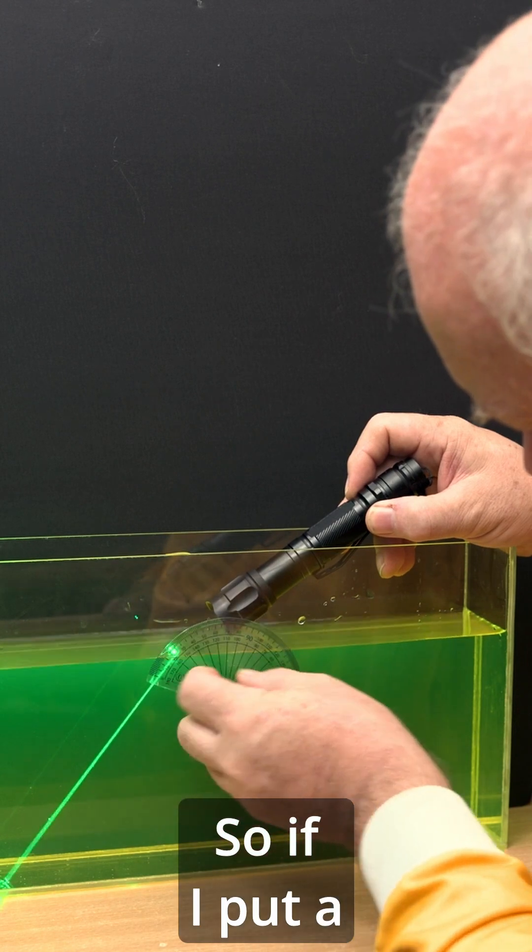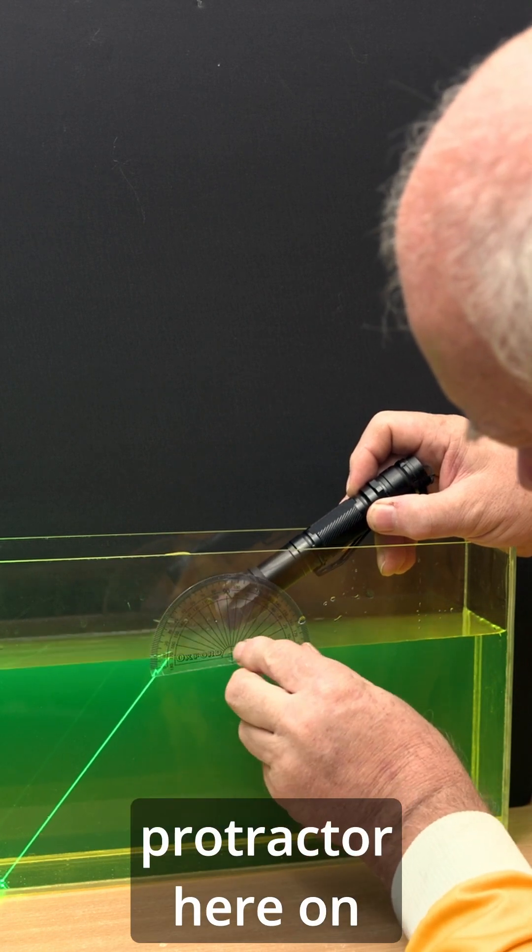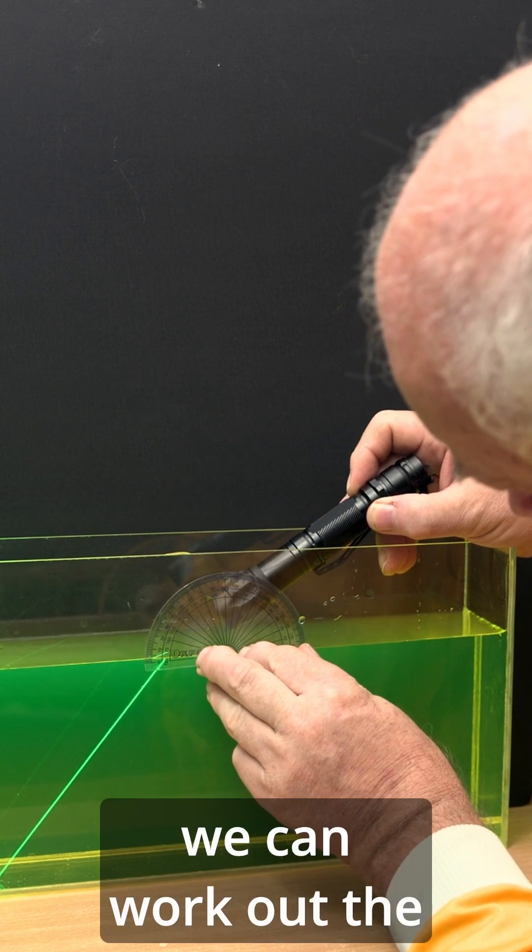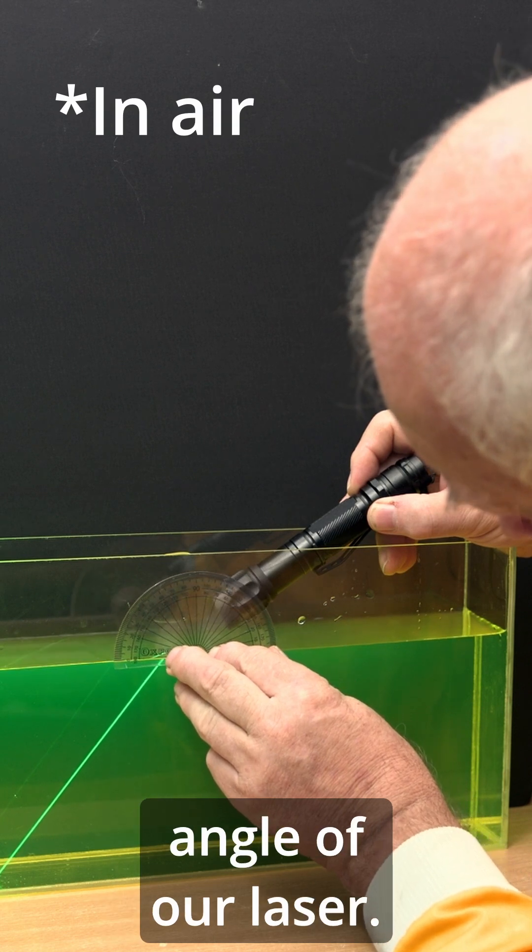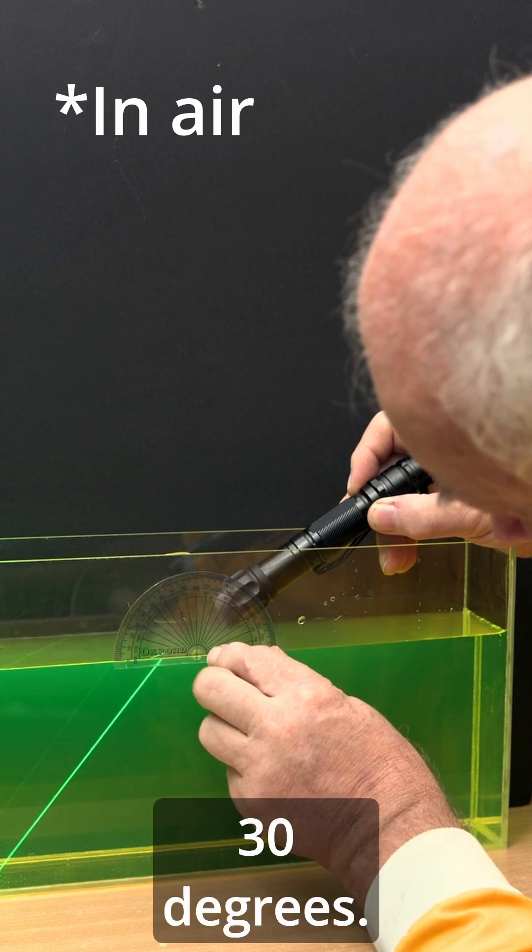So if I put a protractor here on the water, we can work out the angle of our laser is going in about 30 degrees.